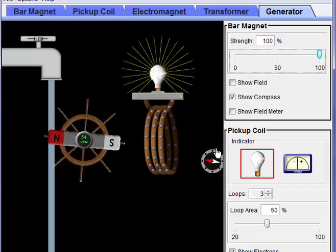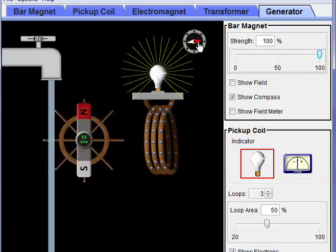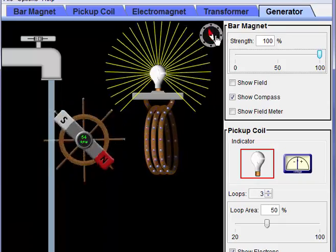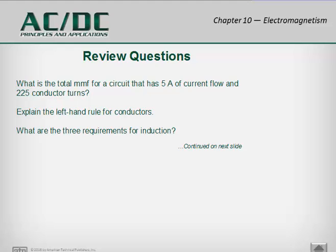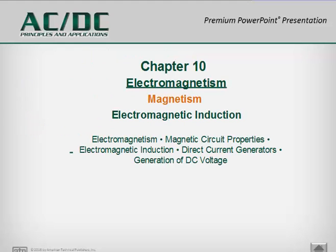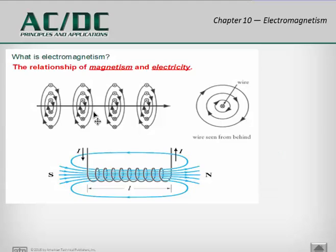If you get a compass near a magnetic field or an electrical wire that has a magnetic field, it will affect that compass. In review, this chapter has been about electromagnetic induction, magnetism, and electromagnetism. We now understand more about the magnetic fields associated with electrical current traveling through a wire. Next we'll be looking at the math calculations and doing some of the review questions at the end of the chapter.